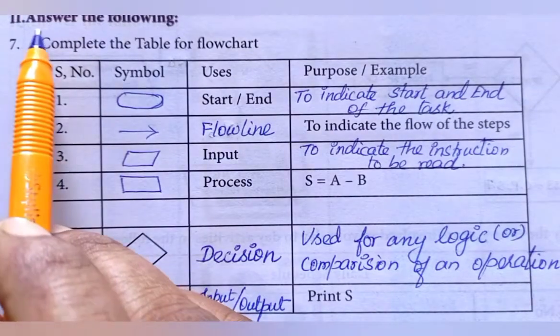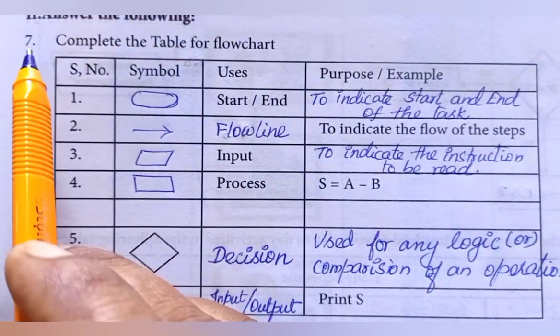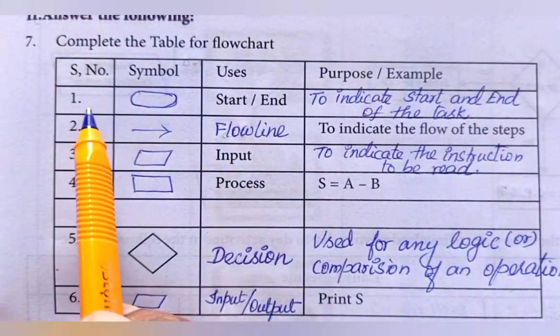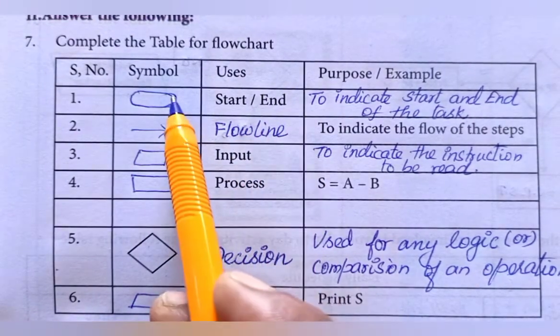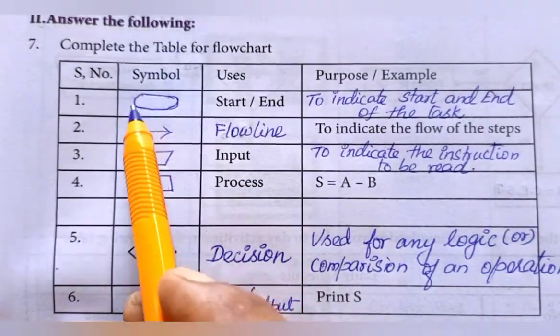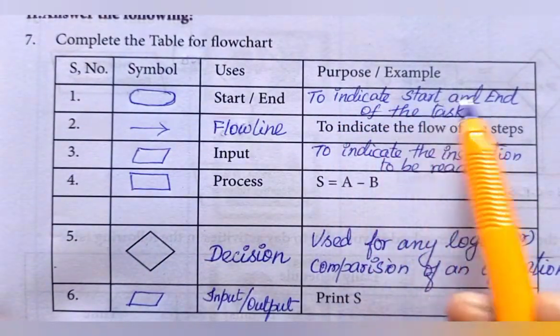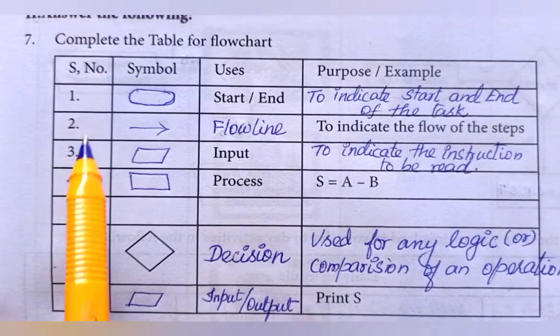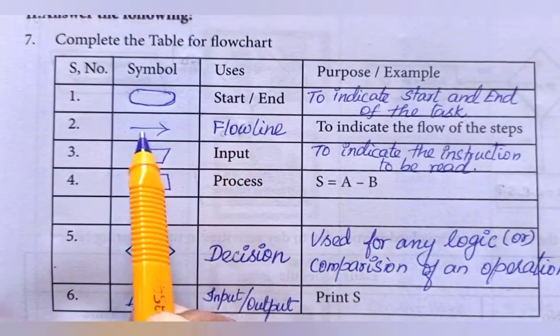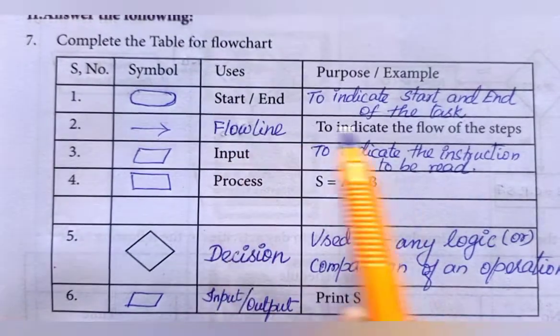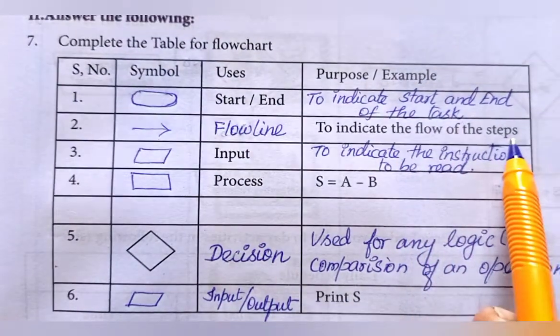Second room: answer the following. Seventh question: complete the table for flowchart. First serial number, start or ending. It is to indicate start and end of the task. At the second one, the flowline. So, direction mark in the flowline. This is the flowline. To indicate the flow of these steps.